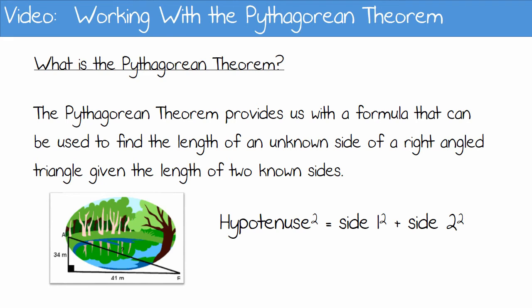The formula, or Theorem, hypotenuse squared is equal to side 1 squared plus side 2 squared.